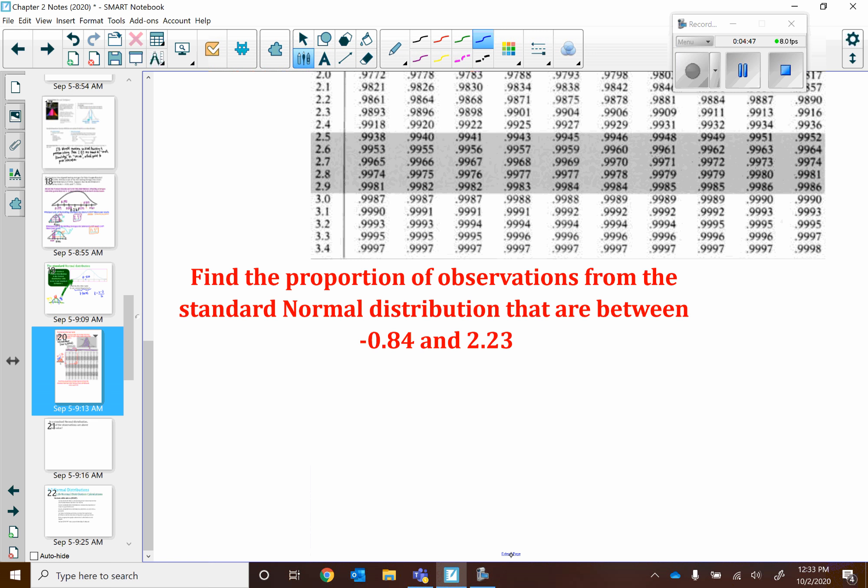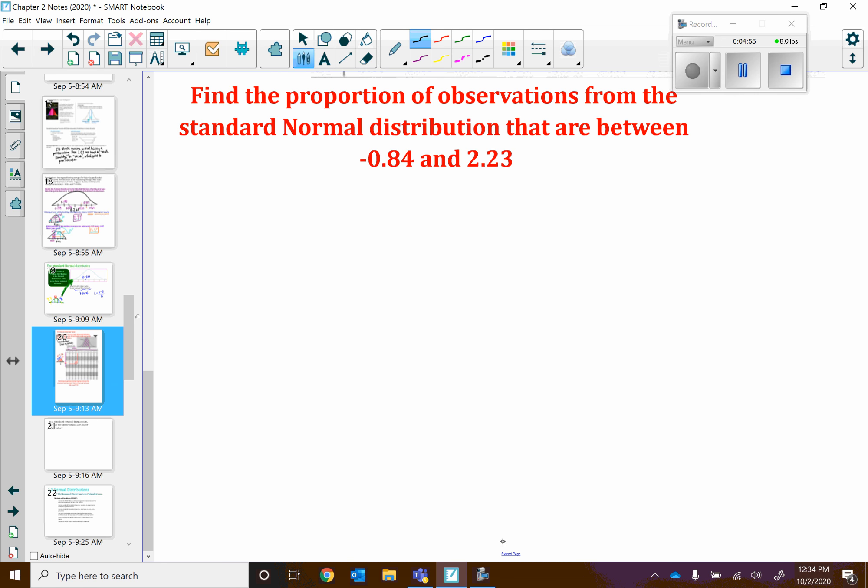So find the proportion of observations from the standard normal distribution that are between negative 0.84 and positive 2.23. Let's start by sketching that out. So standard normal curve, that means a mean of zero with three standard deviations above, three standard deviations below. I'm going to add in negative 0.84, so a little less than 1, negative 0.84, and positive 2.23. So that's 1, 2, 2.23 is maybe here, 2.23. We're going to find the proportion of observations that are between these, so I'm going to shade in between.